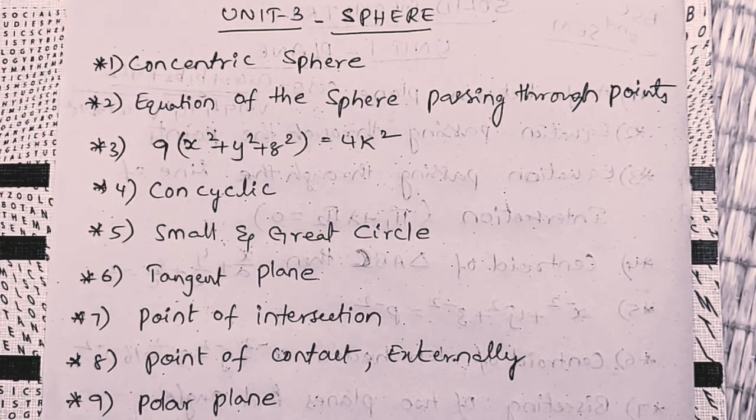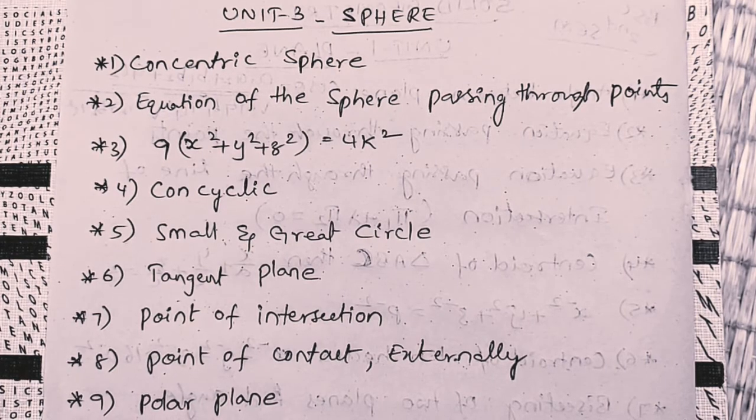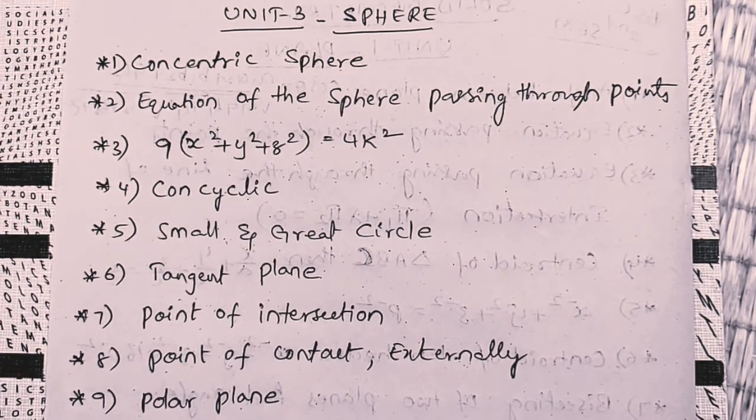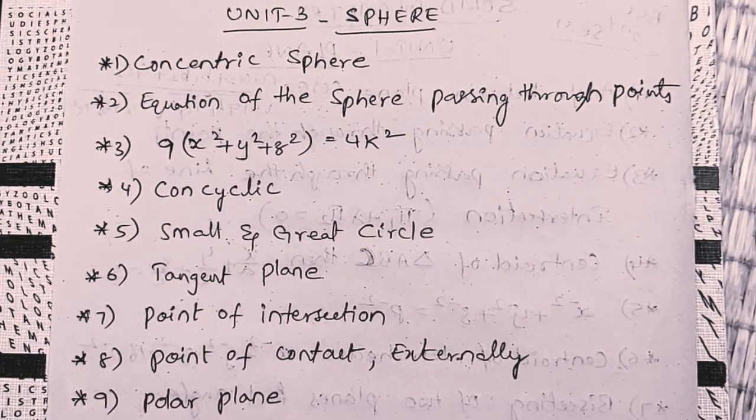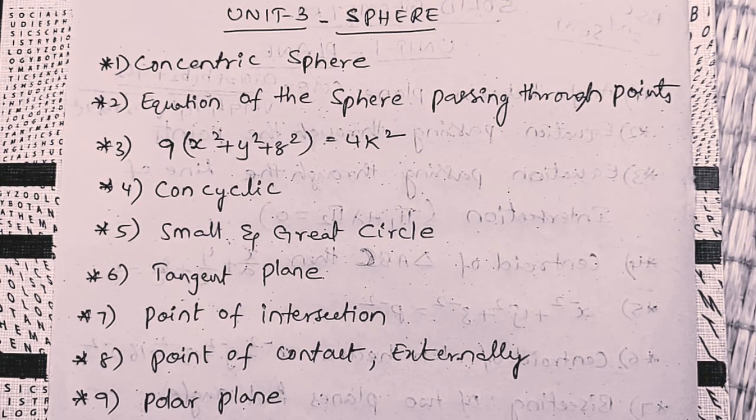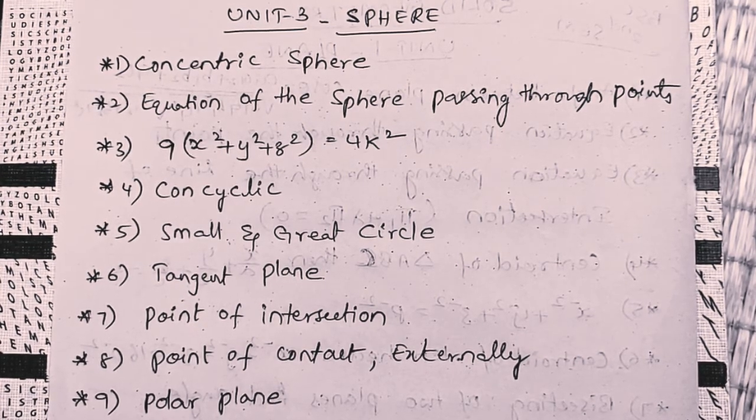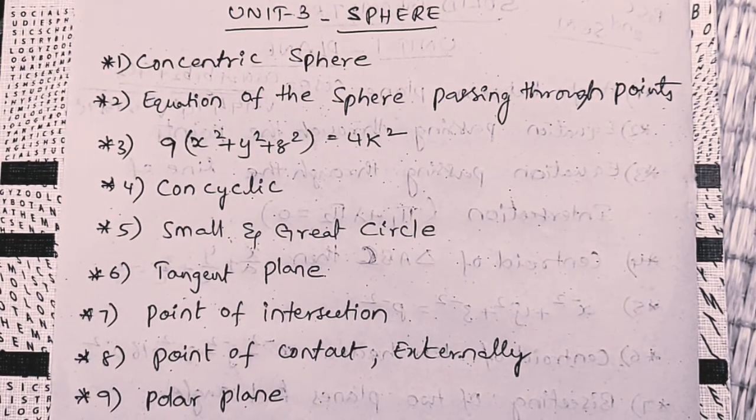Concentric sphere. Equation of the sphere passing through points. 9 into x square plus y square plus z square equals 4k square. Concyclic. Small and great circle. Tangent plane. Point of intersection. Point of contact externally. And polar plane.